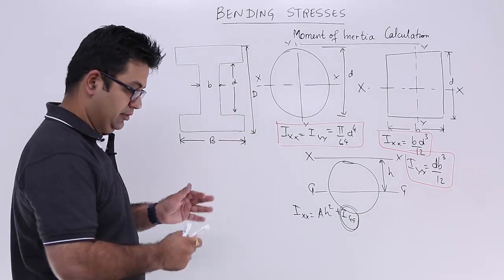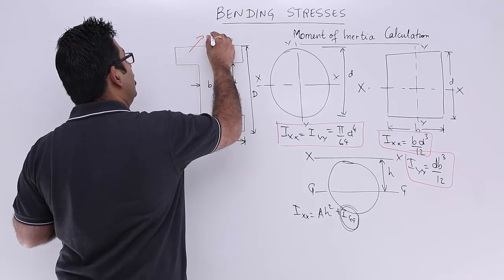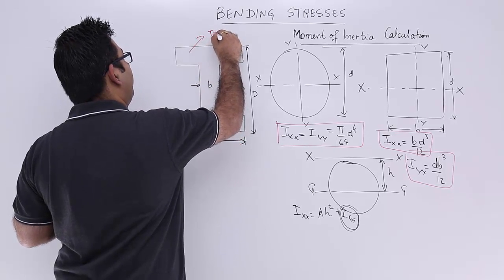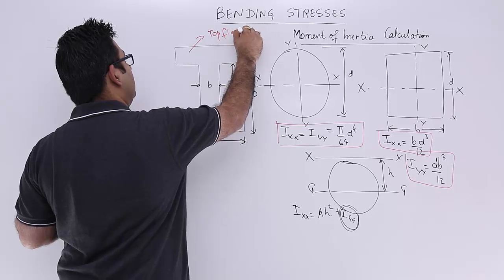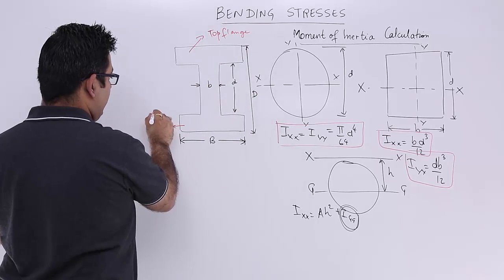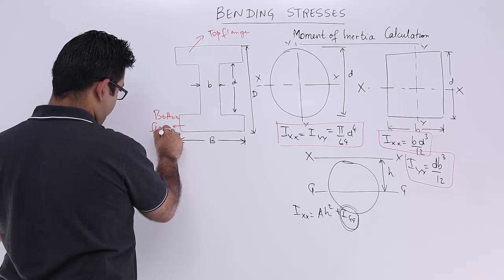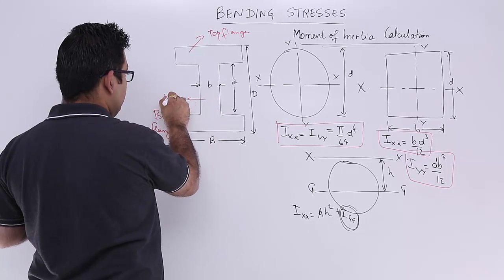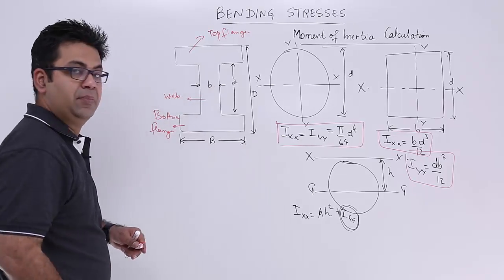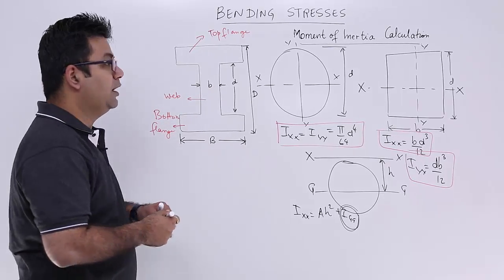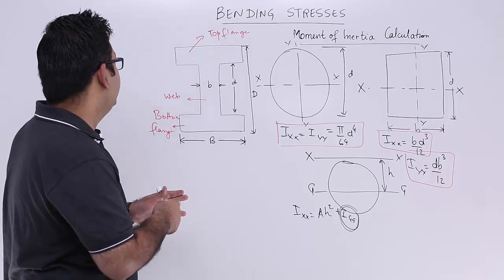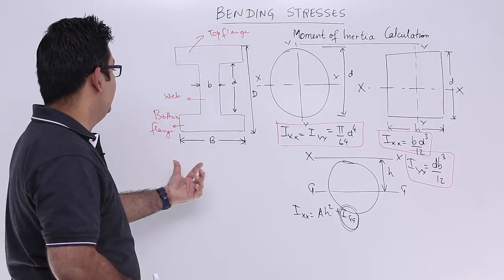This is an I-section in which this is called the top flange, this is called the bottom flange, and this is called the web. So in this case, this is a symmetrical I-section in which the top and the bottom flange are equal in length.